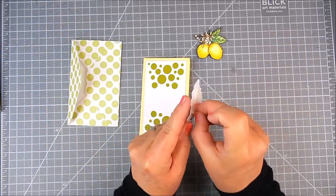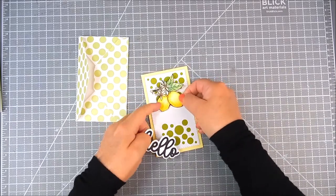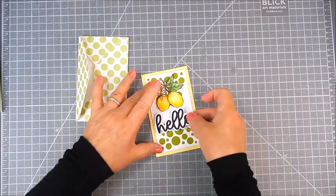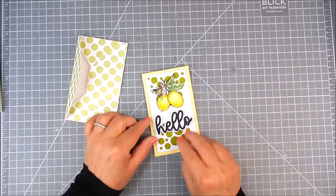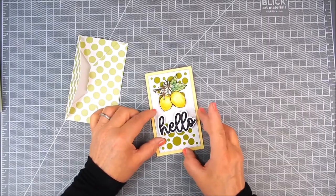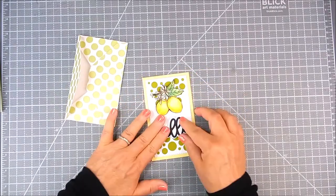And so I just layered that with flat double-sided tape. And then I'm going to layer the hello and the lemons with foam tape just to make it pop up and give a little dimension.